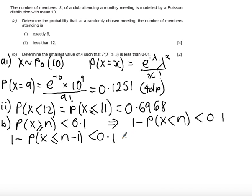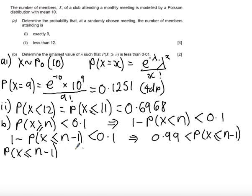If I rearrange this now, subtract 0.1 from both sides, I get 0.99, and then add P(X ≤ N-1) to both sides, and we get P(X ≤ N-1) must be greater than 0.99.